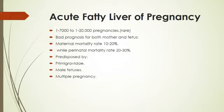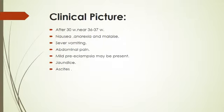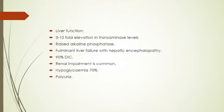Predisposing factors include male fetus and multiple fetuses. The clinical picture occurs after 30 weeks, usually around 36 to 37 weeks, presenting with nausea, anorexia, and malaise, as well as severe vomiting, abdominal pain, epigastric pain. Mild pre-eclampsia may be present, and jaundice is also seen.